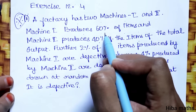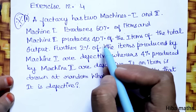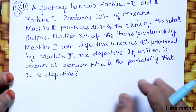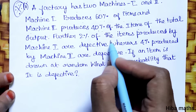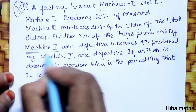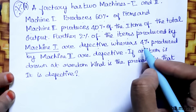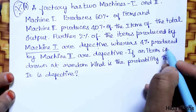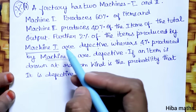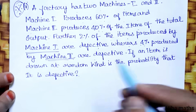Machine 1 produces 60% of items and Machine 2 produces 40% of items. Further, 2% of items produced by Machine 1 are defective, whereas 4% of items produced by Machine 2 are defective.